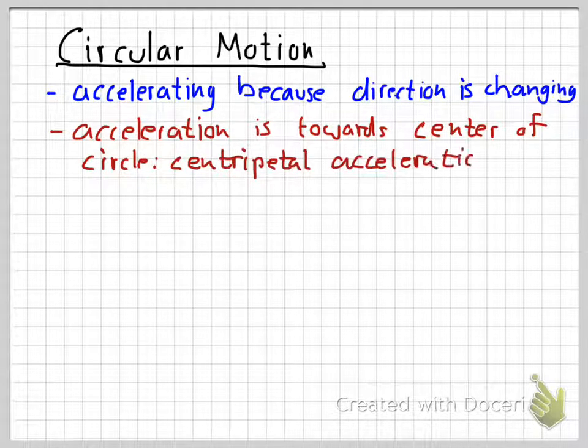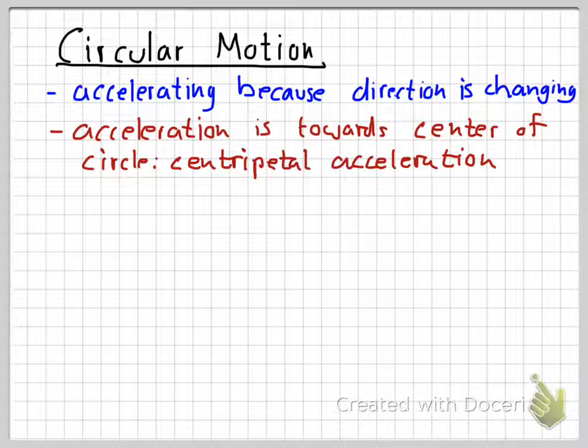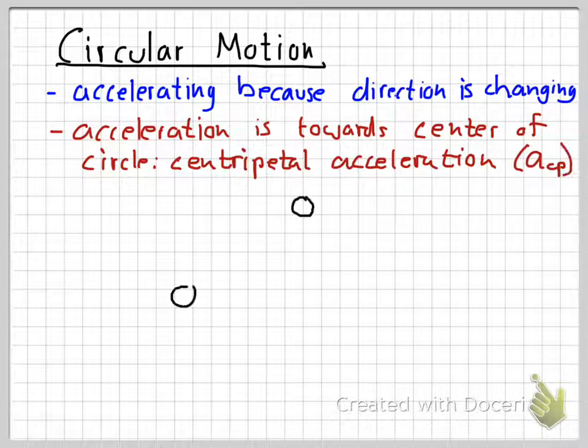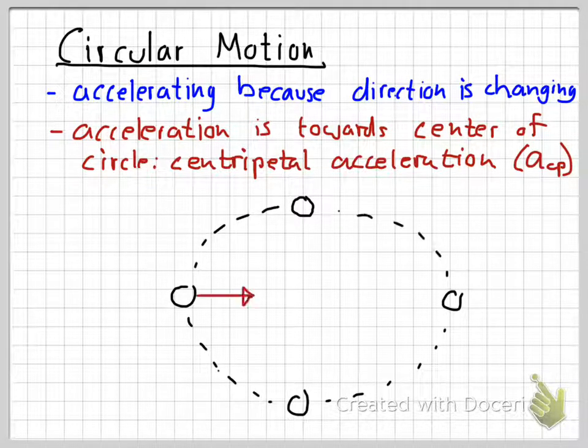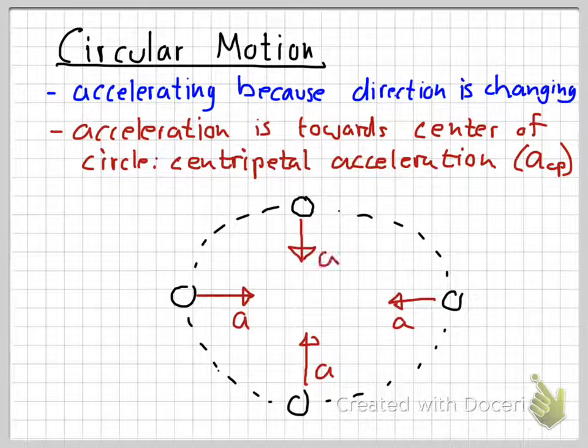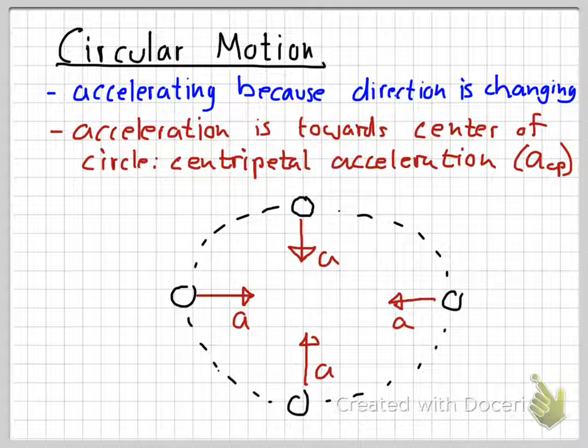Remember, the acceleration is directed towards the center of the circle, so we use the term centripetal acceleration to describe the acceleration. We can give it the symbol A with the subscript CP. So if we look at an object moving in a circle like this, remember that the acceleration is always directed inward. That's why we use the term centripetal acceleration.